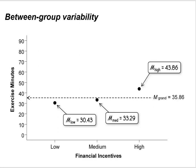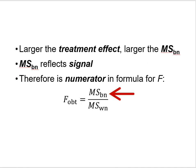The mean square between groups is important to you as the researcher: if your independent variable has a big effect, you hope the treatment condition means deviate a lot from the grand mean. The larger the treatment effect, the larger the mean square between. Remember that mean square between reflects signal in this signal-to-noise ratio, and therefore serves as the numerator in the formula for computing F. I've got a red arrow pointing at the mean square between to reflect that it's the signal in our ratio.